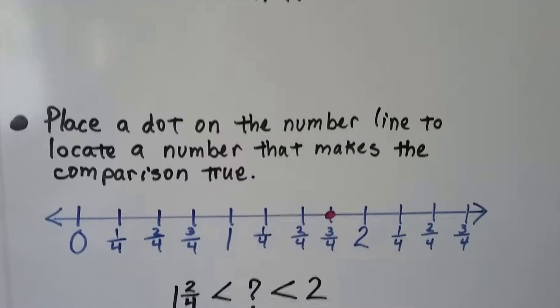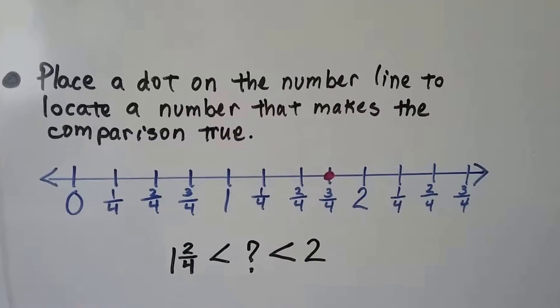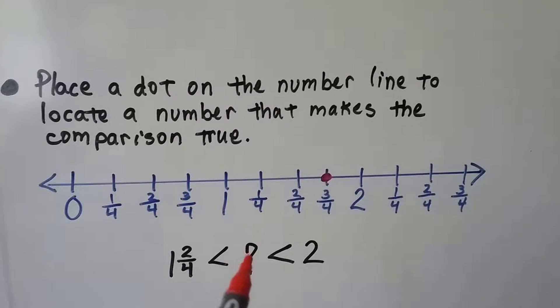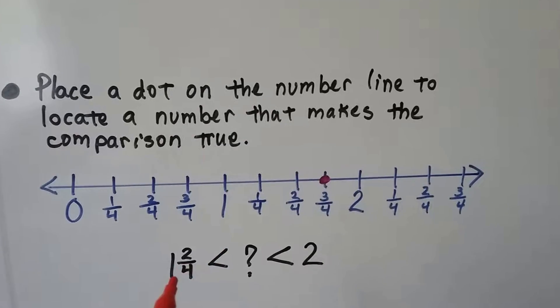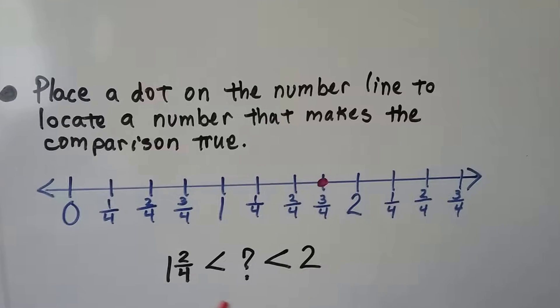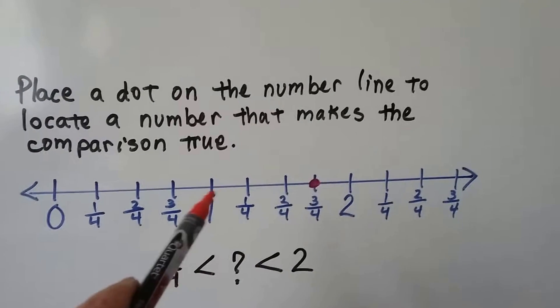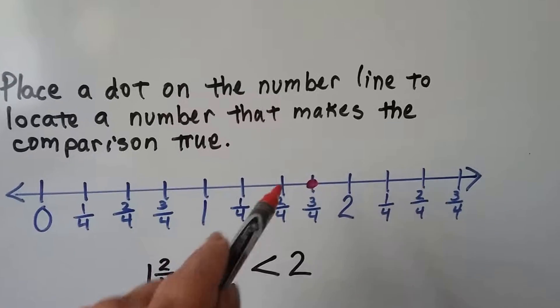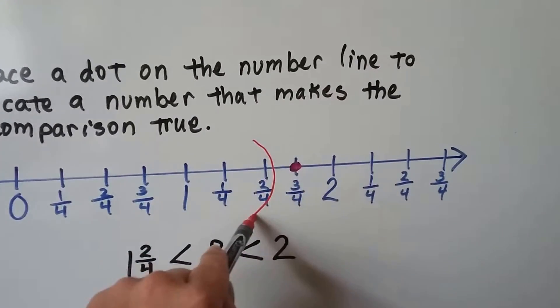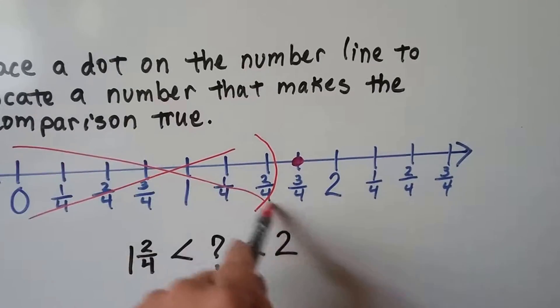Place a dot on the number line to locate a number that makes the comparison true. So here we've got a question mark, and we can see that it's supposed to be greater than 1 and 2 fourths, but less than 2. Well, if it's greater than 1 and 2 fourths, then here's 1, 1 fourth, 2 fourths. So that means if it's greater than this, then it can't be these. So all of these are a no.